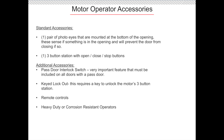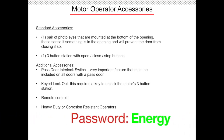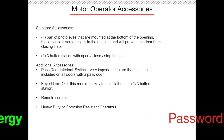The standard accessories and components for these operators include a set of photo eyes and a three-button station with open, closed, and stop buttons. Additional accessories include a pass door interlock switch — which is mandatory for an overhead door with an ADA compliant pass door and will be explained in further detail. Keyed lockout requires a key to unlock the motor's three-button station, which is good for public settings like schools, restaurants, and retail locations where a manager holds the key. Remote controls do not come standard with commercial operators, so specify remotes if necessary. Heavy duty and corrosion resistant operators are also available.